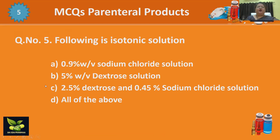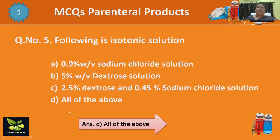Next question: which of the following is an isotonic solution? There are several options. 0.9% w/v sodium chloride solution is correct. 5% dextrose is correct. And the combination of 2.5% dextrose and 0.45% sodium chloride is also correct. So the answer is all of the above.